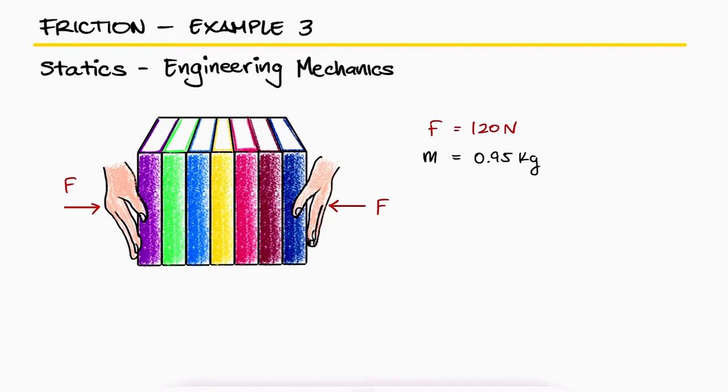what is the greatest number of books that can be supported in the stack? The coefficient of friction between the man's hands and the book is 0.6 and between any two books is 0.4. This is the third example for the friction main video.